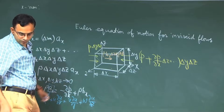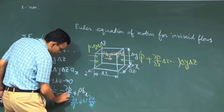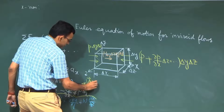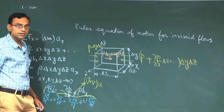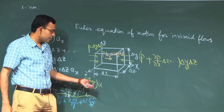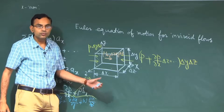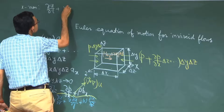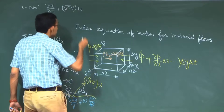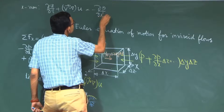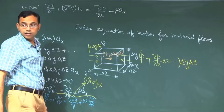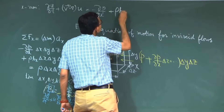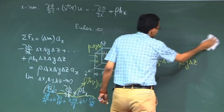We can write this in vector form. The so-called convective component of acceleration involves the dot product of the velocity vector with the nabla operator acting on u. This is the Euler equation of motion along the x-direction in its component form.